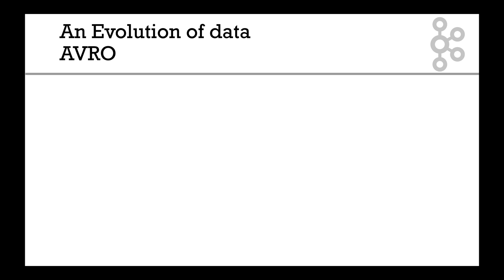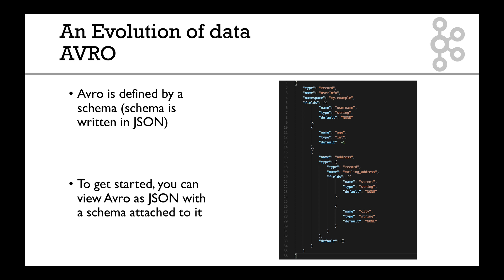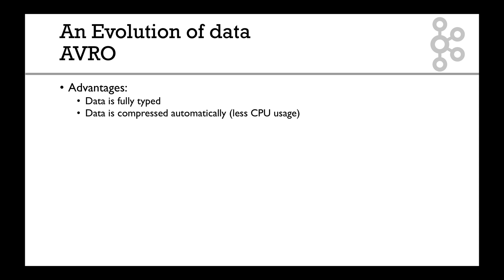Before we defined that our username was a string and that our age was an integer. So data is fully typed and it's named as well. You can compress it automatically. By the way, if the column name is very long, it doesn't matter - it'll be compressed, so less CPU usage. The schema comes alongside with the data, so there is no data that's just lonely. There's always its schema nearby, and that means the data itself is self-explanatory. You can embed documentation in the schema.